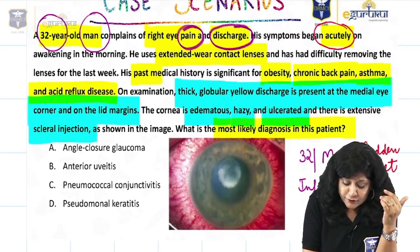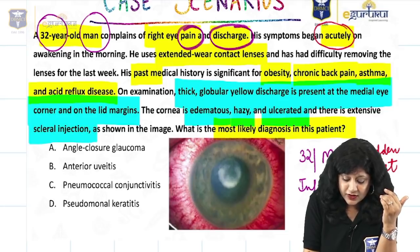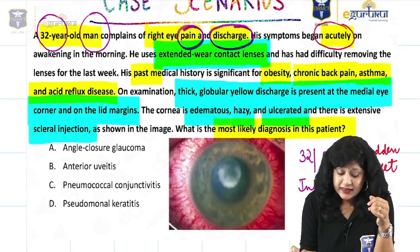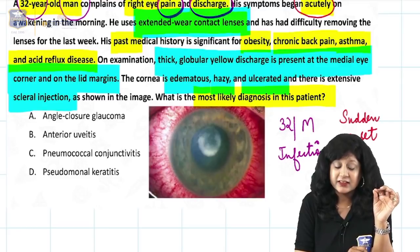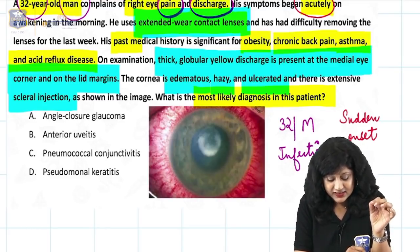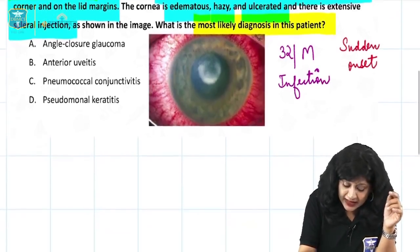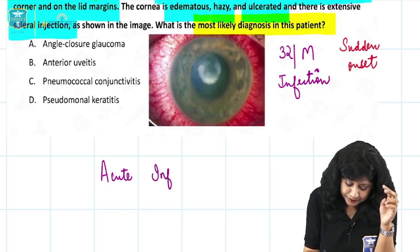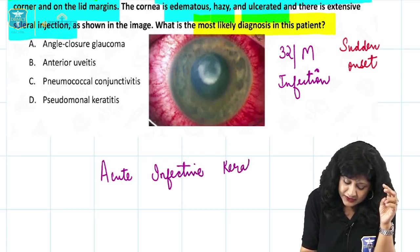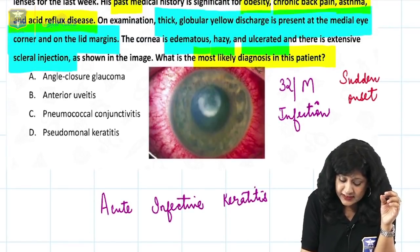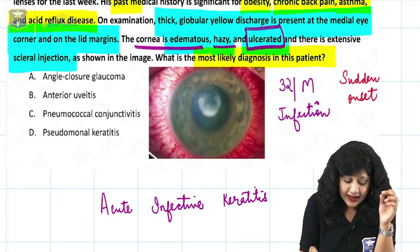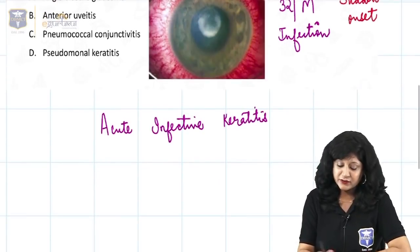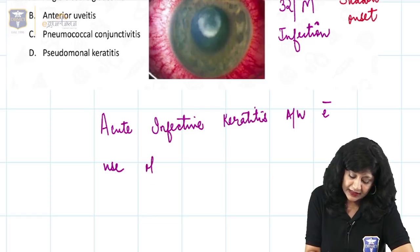There is a very important risk factor given — the use of extended wear contact lenses. Something is happening in the cornea. Looking at the examination findings: the cornea is edematous, hazy, ulcerated, and there is extensive scleral injection. To summarize, this patient is having acute infective keratitis. I say keratitis because they themselves state the cornea is edematous, hazy, and ulcerated, associated with contact lens use.